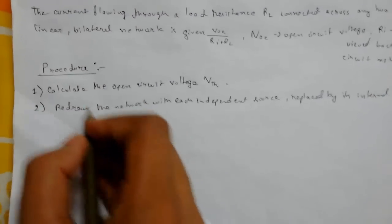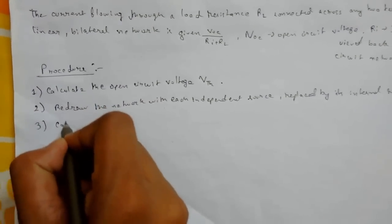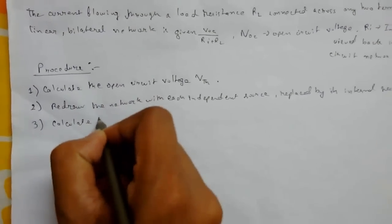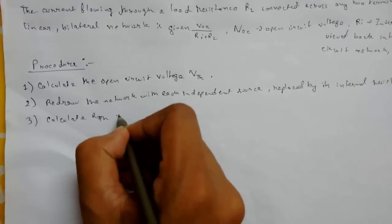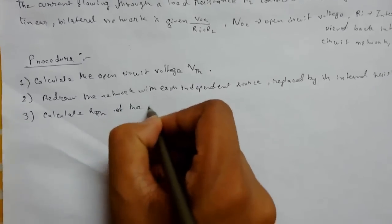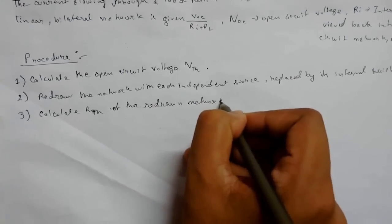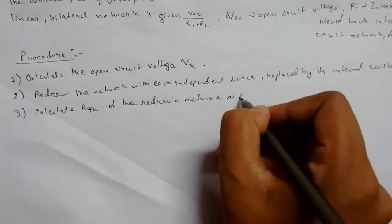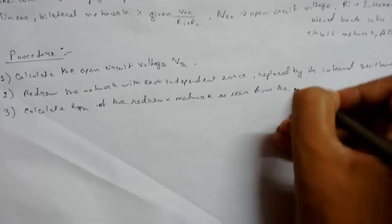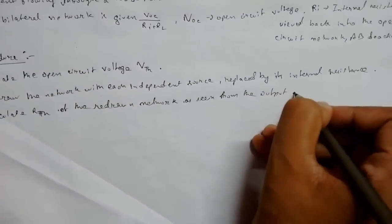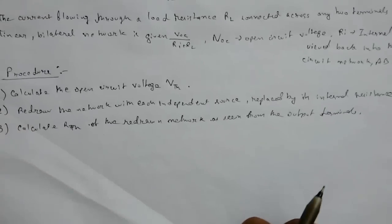And third: Calculate Rth, that is Thevenin resistance of the redrawn network, from the output terminals as viewed or seen from the output terminals. So this was our theorem and procedure.